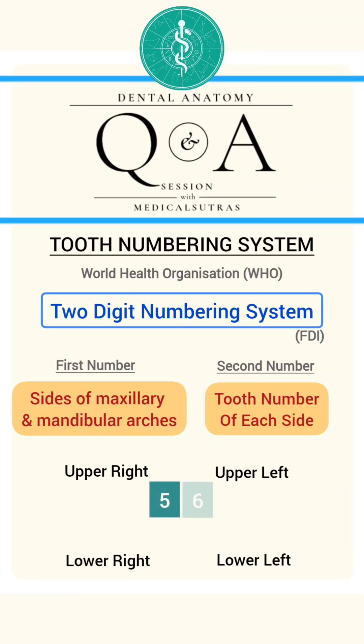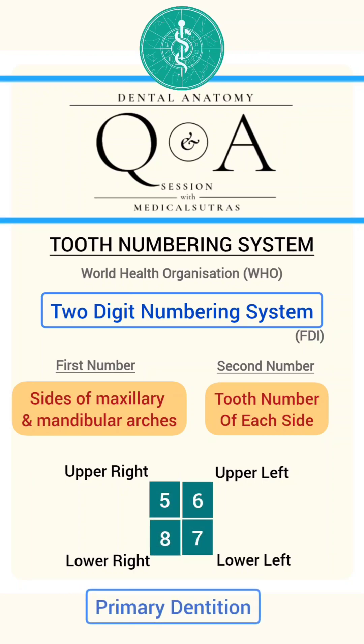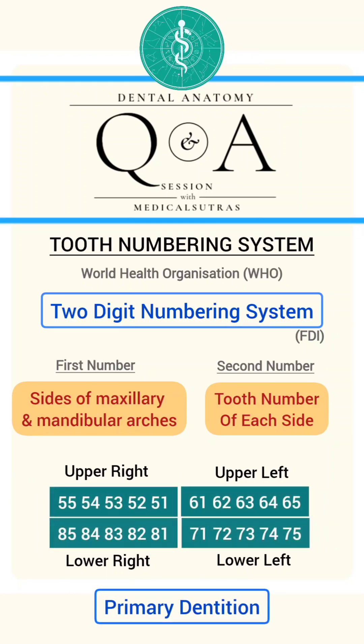5, 6, 7, and 8 are used to denote the quadrant in primary dentition. The teeth are numbered 1 through 5 in each quadrant, starting with the central incisor.